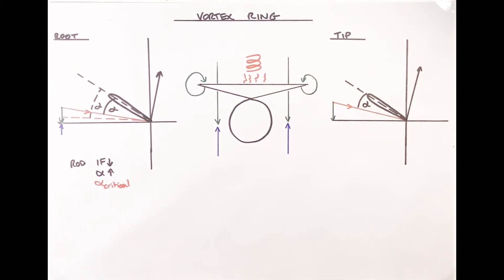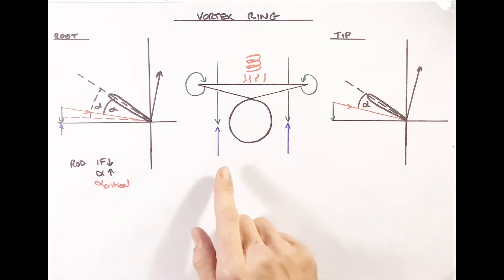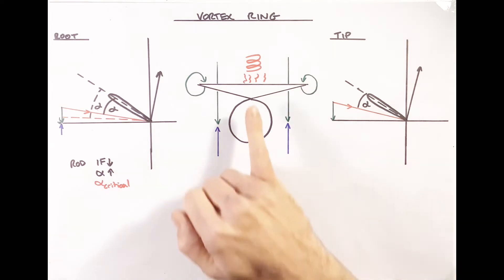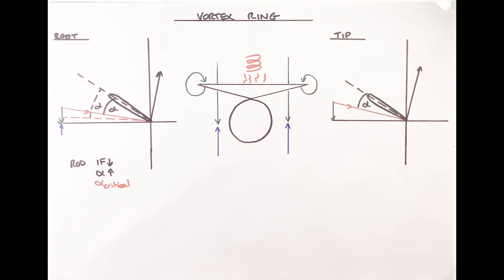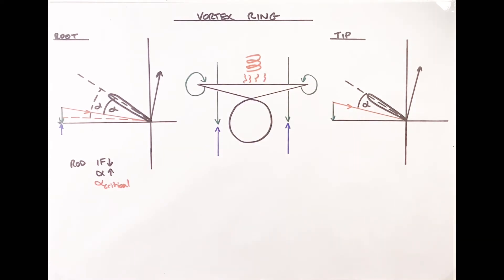That's the first stage - a stall initiated at the root, which may not be very noticeable early on. The faster we descend, the further outward this stall spreads, because the rate-of-descent flow has greater impact at more stations along the blade. If the aircraft loses lift in the middle, the rate of descent increases. The natural reaction is to raise the collective to increase pitch, but that only exacerbates the stall, extends it further along the blade, and further increases the rate of descent.